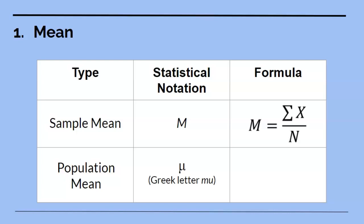The formula is the same as sample mean, but uses mu instead. So mu equals the sum of X divided by N.